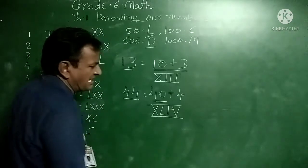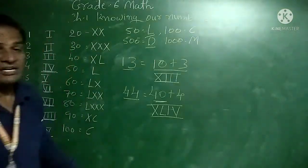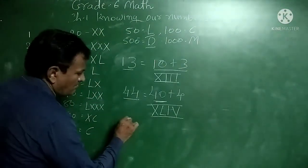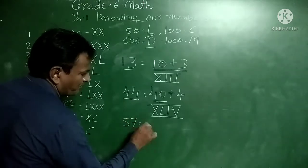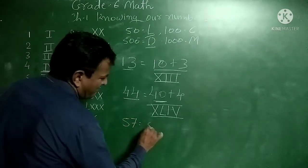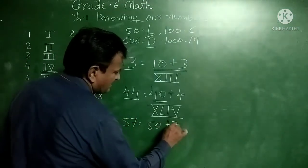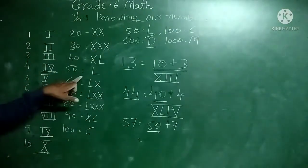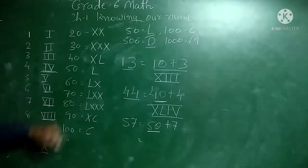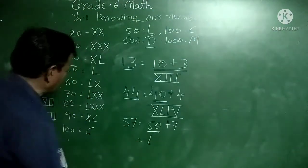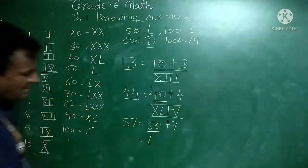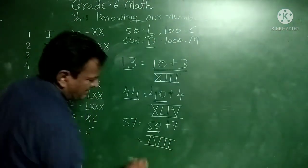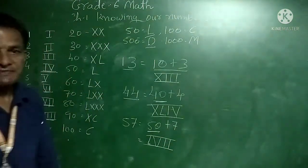Next, we write 57. For 50, the symbol is L. For 7, we write VII. So 57 in Roman numerals is LVII.